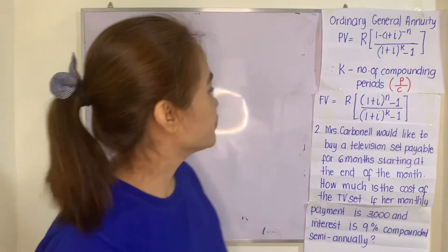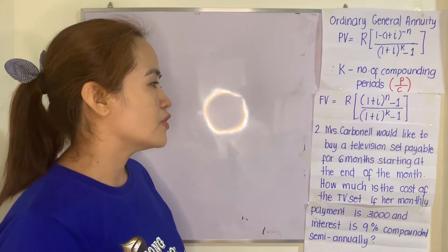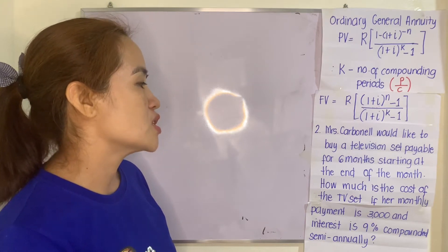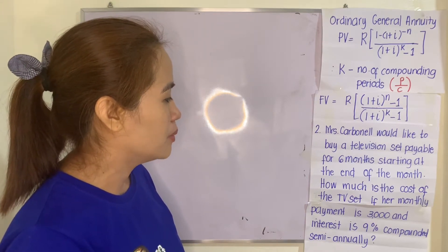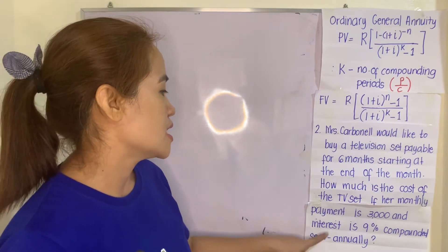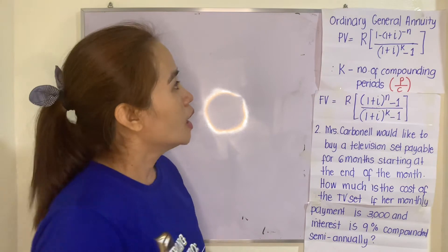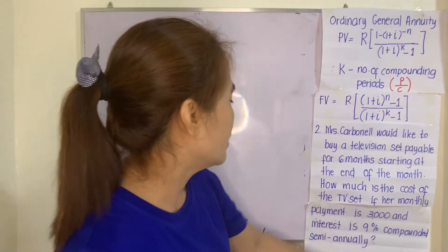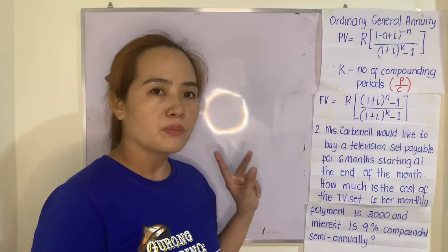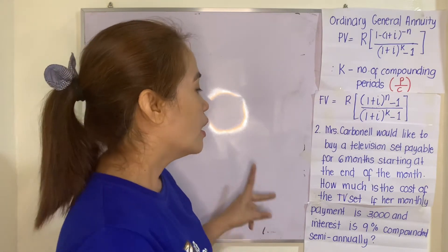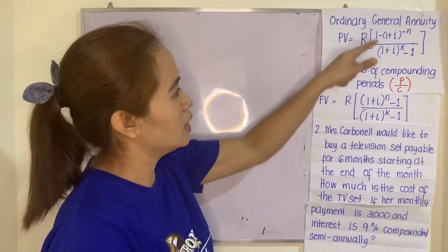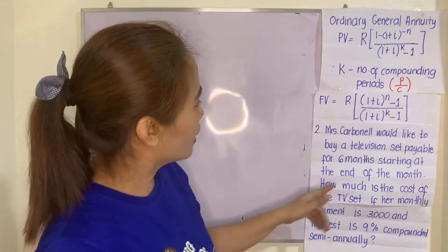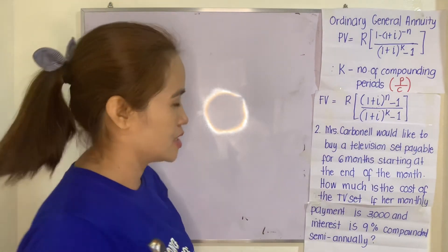That's Example 2. Mrs. Carbonell would like to buy a television set payable for six months starting at the end of the month. How much is the cost of the television set if the monthly payment is 3,000 and interest is 9% compounded semi-annually? Let us verify: the payment interval is monthly and the compounding period is semi-annually — they are different, so it is a general annuity. It says 'at the end of the month,' so it is ordinary.